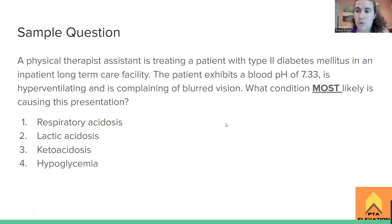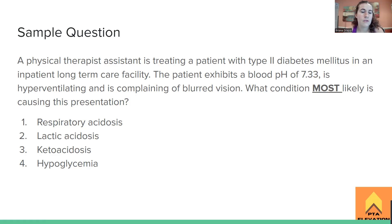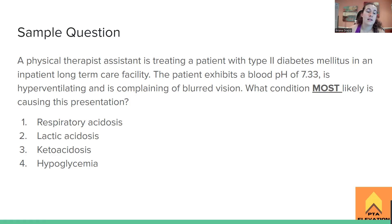Sample question: A physical therapist assistant is training a patient diagnosed with type two diabetes mellitus in an inpatient long-term care facility. The patient exhibits a blood pH of 7.33, is hyperventilating, and is complaining of blurred vision. What condition most likely is causing this presentation? Option one: respiratory acidosis. Option two: lactic acidosis. Option three: ketoacidosis. Option four: hypoglycemia.